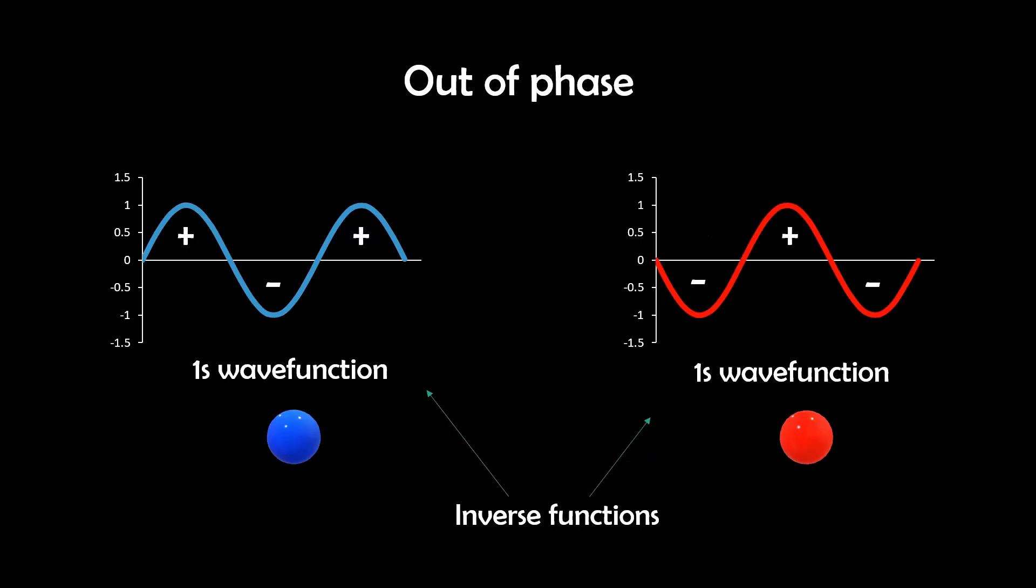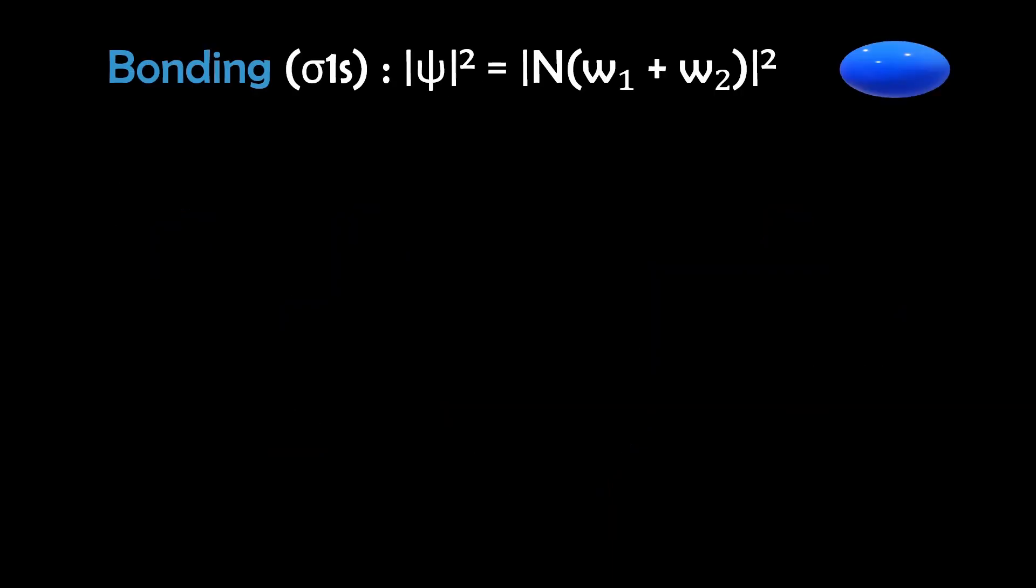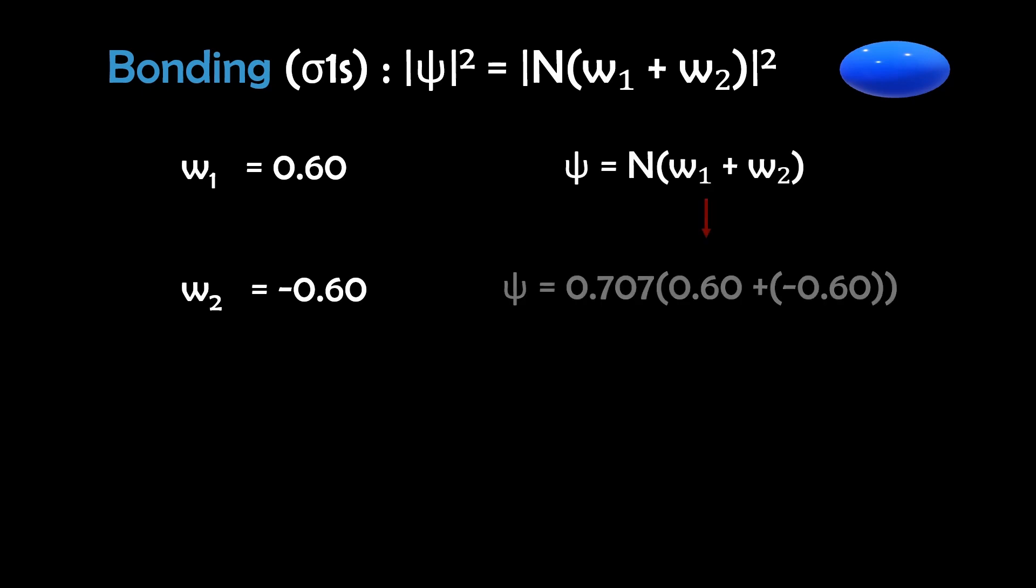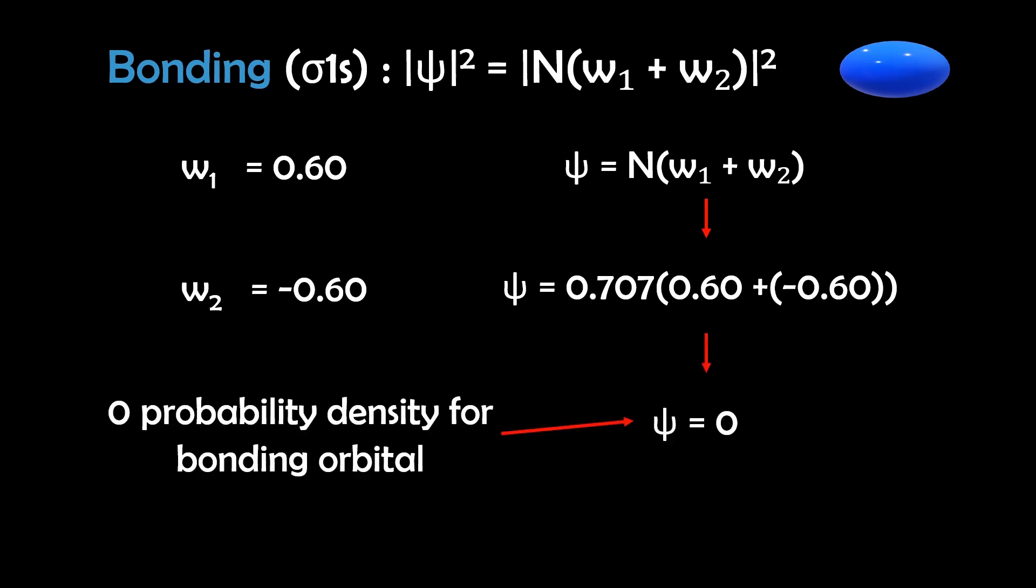But what happens if the orbitals are out of phase? And with molecular orbitals, that simply means their wave functions have opposite signs. They're misaligned in terms of their peaks and troughs. So let's say that ψ1 equals 0.60, and ψ2 equals negative 0.60. For the bonding orbital, we have ψ equals 0.707 times 0.60 plus negative 0.60, and that would give us zero, which means we have a node or zero bonding for the bonding orbital.